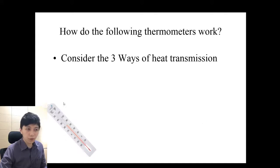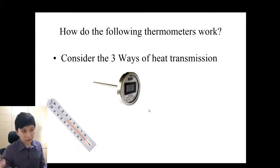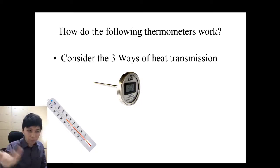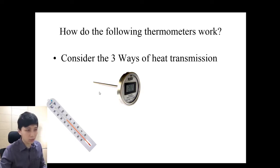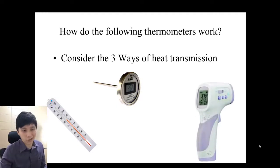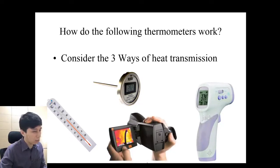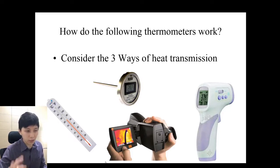The first thermometer works by conduction. The second — a probe-type for cooking meat — is also by conduction, as you insert it directly. The third has no direct contact and obviously uses radiation. The last one is a thermal camera, which also relies on infrared radiation.